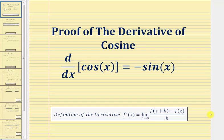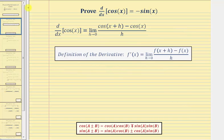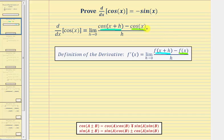Welcome to a proof that the derivative of cosine x equals negative sine x. So if we have the function f of x equals cosine x, by definition the derivative is equal to the limit as h approaches zero of the difference quotient, which would be f of the quantity x plus h — in our case cosine of the quantity x plus h — minus f of x, which would be minus cosine x.